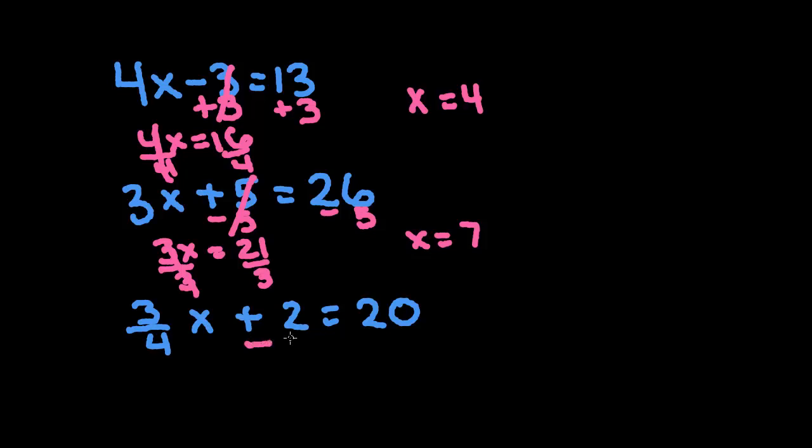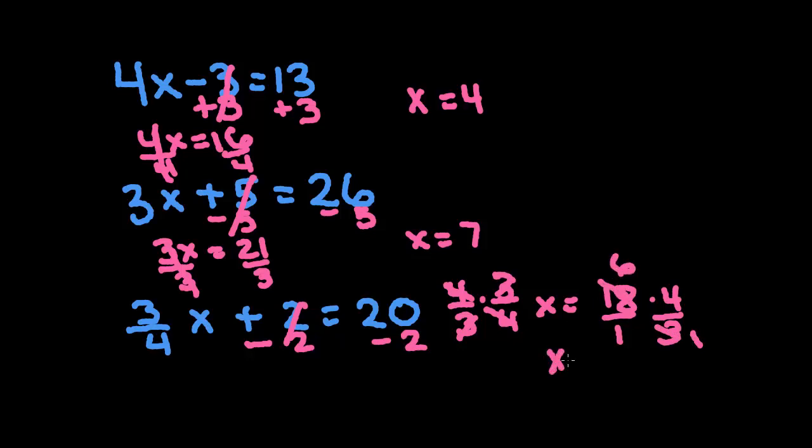On the last one, we would subtract 2. So we get 3 fourths x is equal to 18. Multiply both sides by the reciprocal, 4 thirds. That crosses off completely there. Turn the 18 into an 18 over 1. Cross cancel 1 and 6. 6 times 4 is 24.